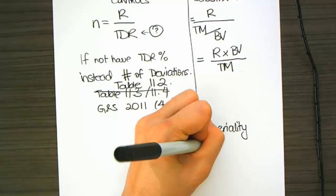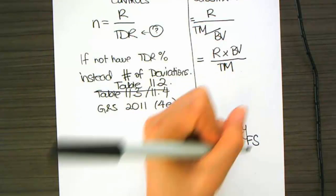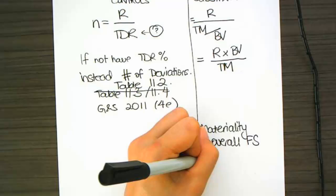So, I know my book value. I know my tolerable misstatement. I've got my R. Then I can calculate N, my sample size.